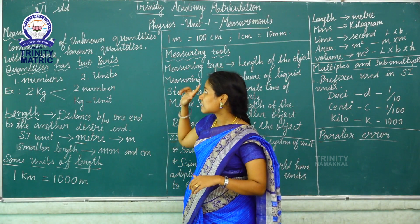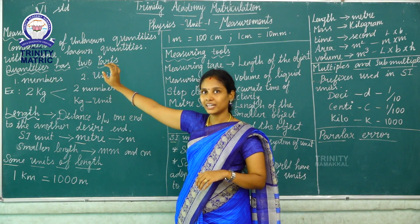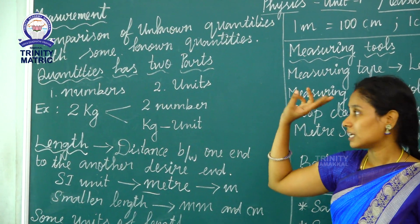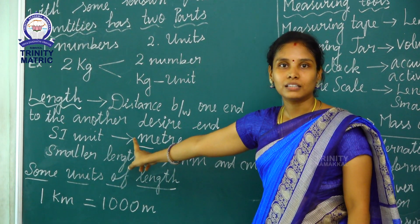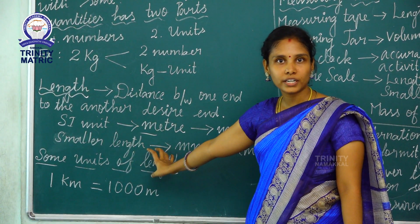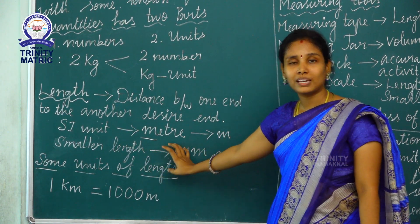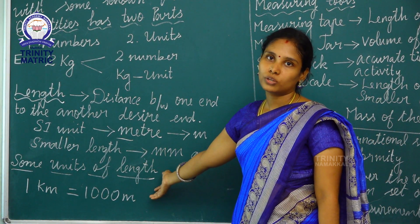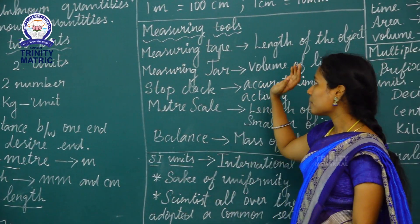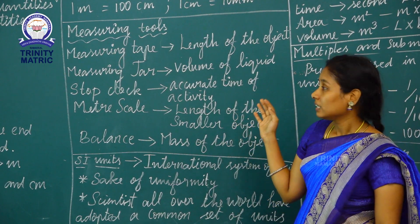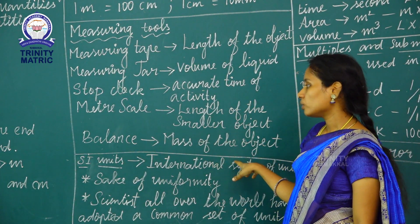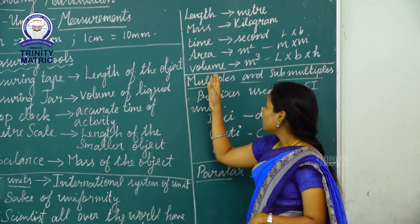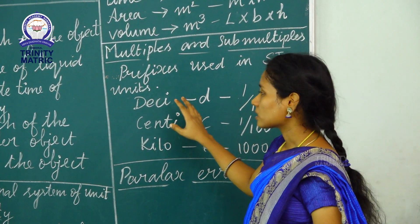Let us recall our chapter. Measurement — definition. Measurement quantities has two parts. Then length — definition, unit, symbol. Some units of length. Measuring tools used in day-to-day life. SI units — why do we need SI units? Multiples and submultiples of SI units.